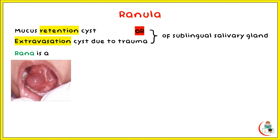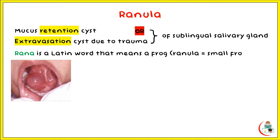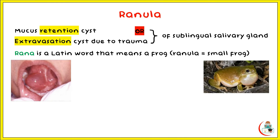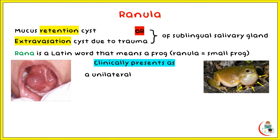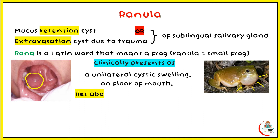Rana is a Latin word that means a frog, and a ranula is a small frog. The picture shows the characteristic vocal sac of a frog, and this explains the ranula name. Clinically, it presents as a unilateral cystic swelling on the floor of the mouth that lies above the mylohyoid muscle.